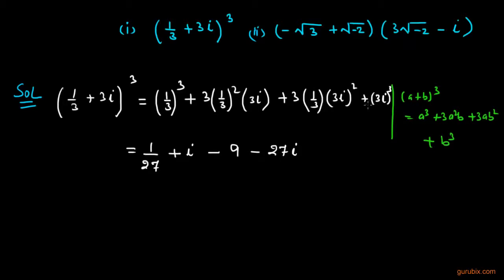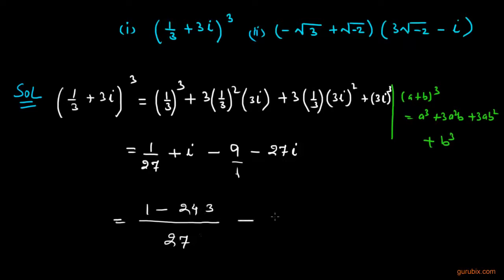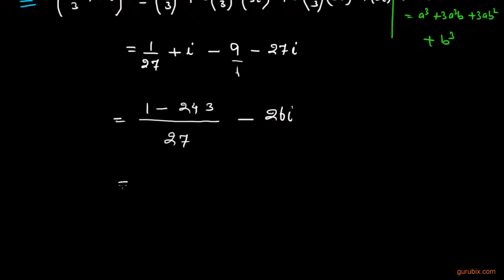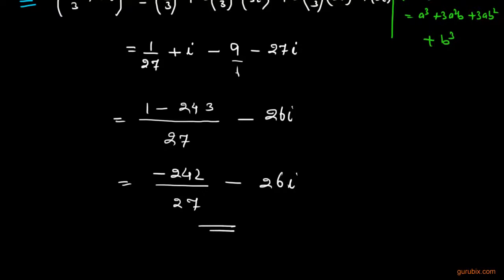The last term gives negative 27 iota because iota cubed equals negative iota. Now taking LCM of 1 and 27 gives 27, and combining terms we get 1 minus 243 over 27, and for the imaginary part, iota minus 27 iota gives negative 26 iota. So the standard form of part 1 is negative 242 over 27 minus 26 iota.